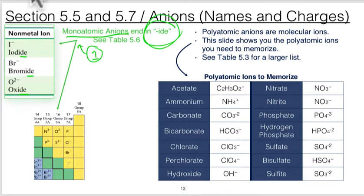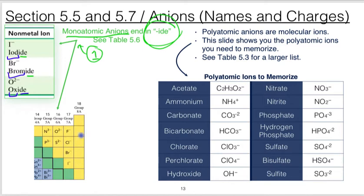The front part of the anion name comes from the element's name. Instead of iodine, it's iodide. Instead of bromine, it's bromide. Instead of oxygen, it's oxide. The full list of monoatomic anions includes: nitride, phosphide, oxide, sulfide, fluoride, chloride, bromide, and iodide. That's it — those are the monoatomic anions.